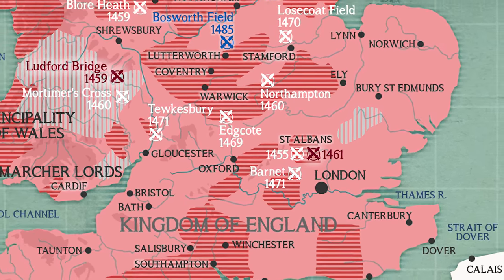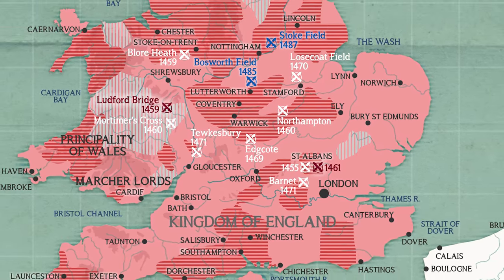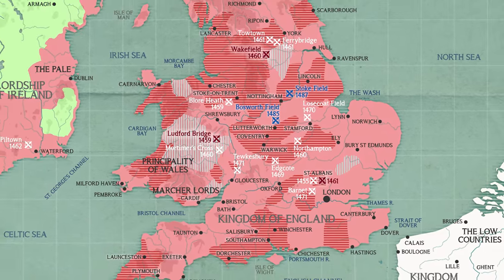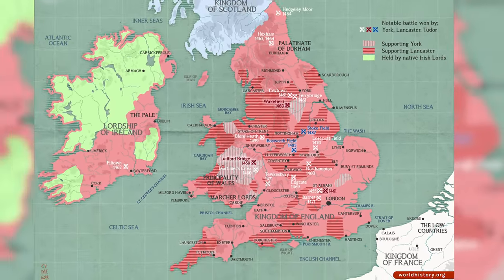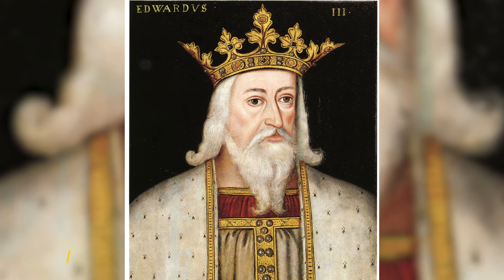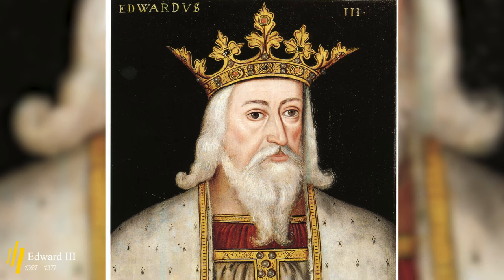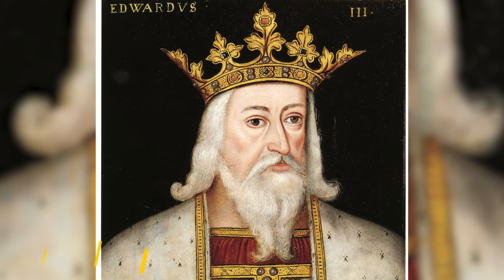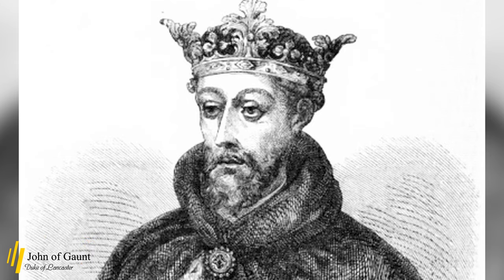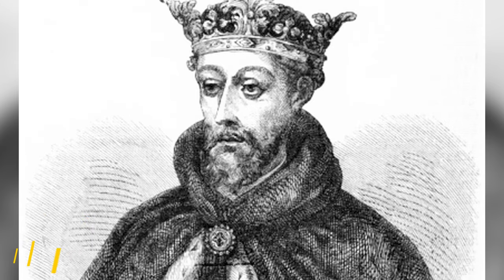The Wars of the Roses was fought between 1455 and 1487. They were a series of civil wars in England that pitted the rival houses of Lancaster and York against each other. Primarily, these wars were over who had the rightful claim to the English throne. Each house claimed descent from Edward III, who reigned from 1327 to 1377, with the House of Lancaster descending from John of Gaunt, the third surviving son of Edward, and the House of York descending from Edmund of Langley, the fourth surviving son and younger brother of John.